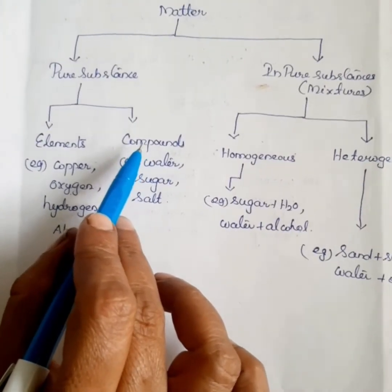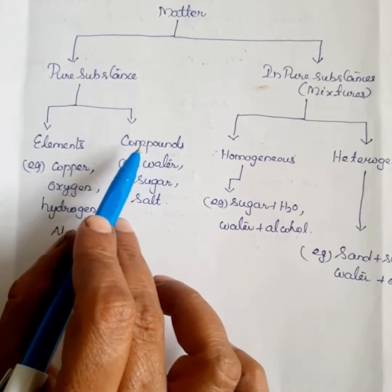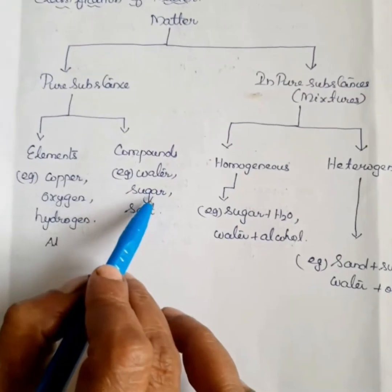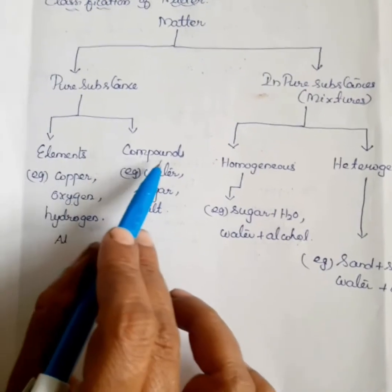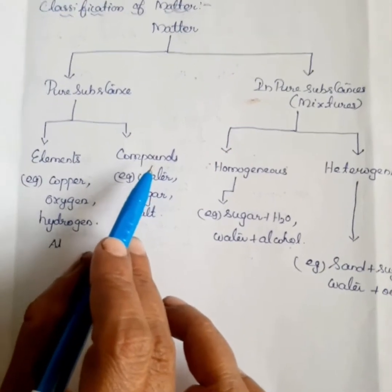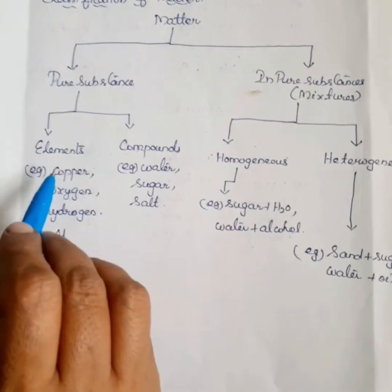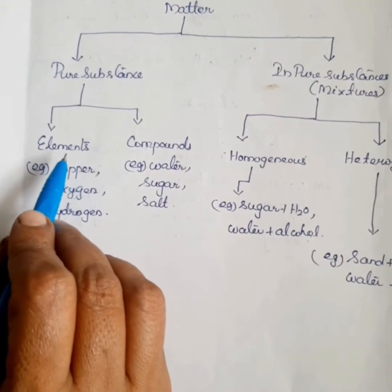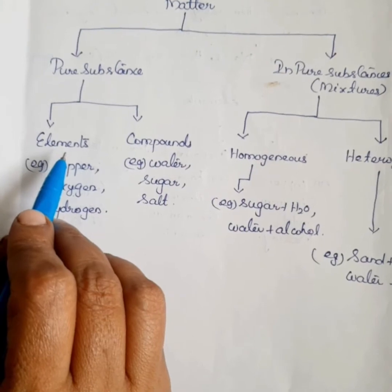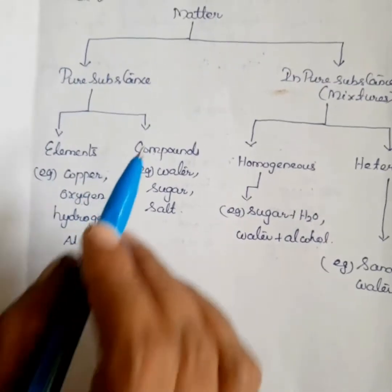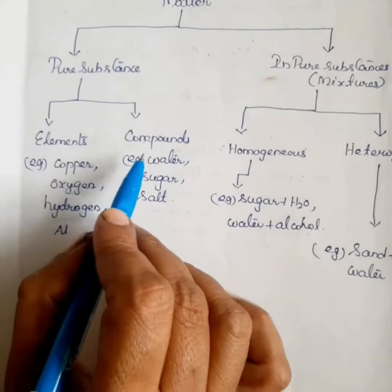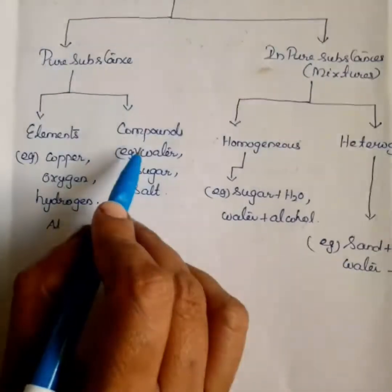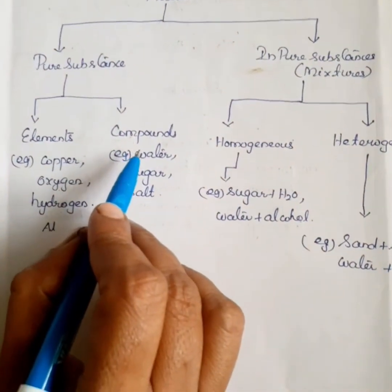Compounds are always in a fixed ratio by mass. Examples of compounds are water, sugar, and salt. Elements cannot be broken down into simpler substances, whereas a compound can be separated into simpler forms by a chemical method.